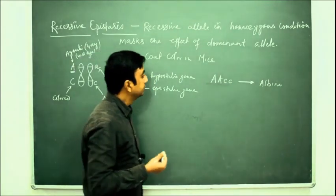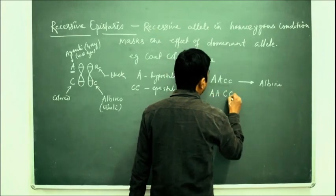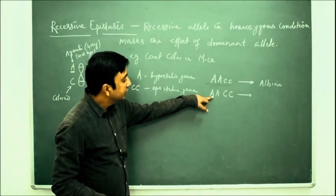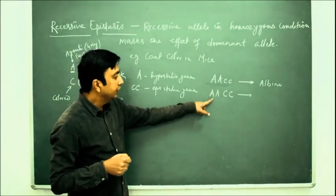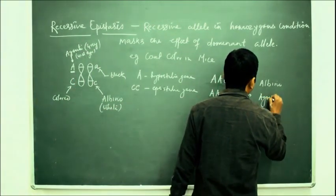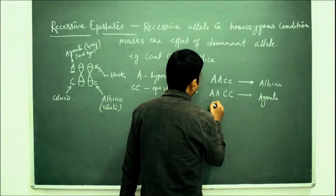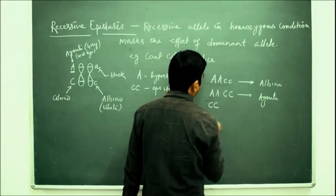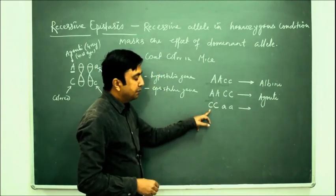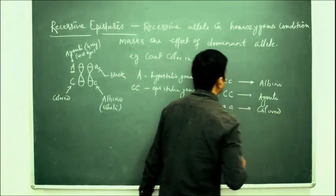If we take capital A capital A, capital C capital C — here both are dominant genes, but since A is a wild type it will express, so it will be agouti. If we take capital C capital C, small a small a — capital C will express, so it will be colored.